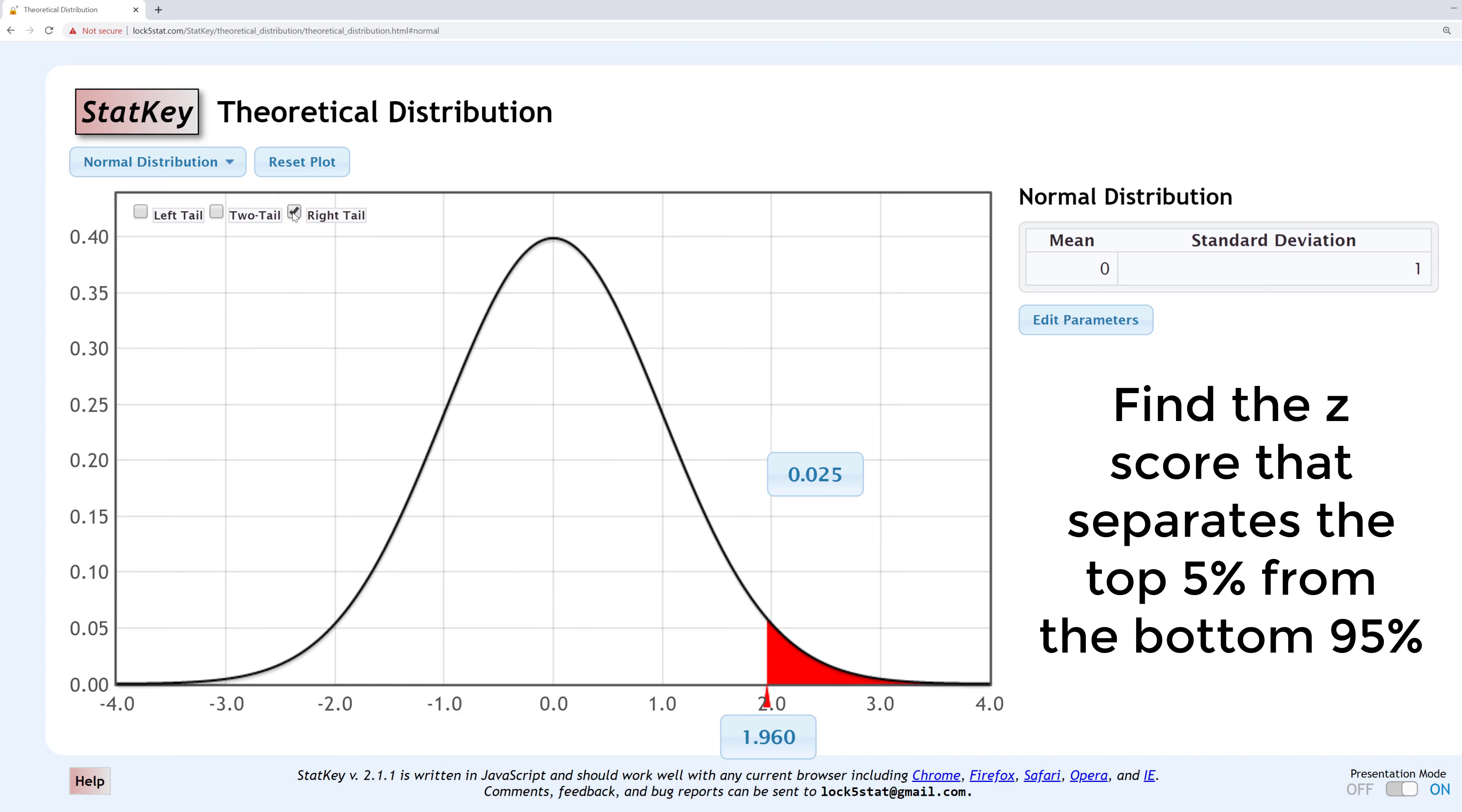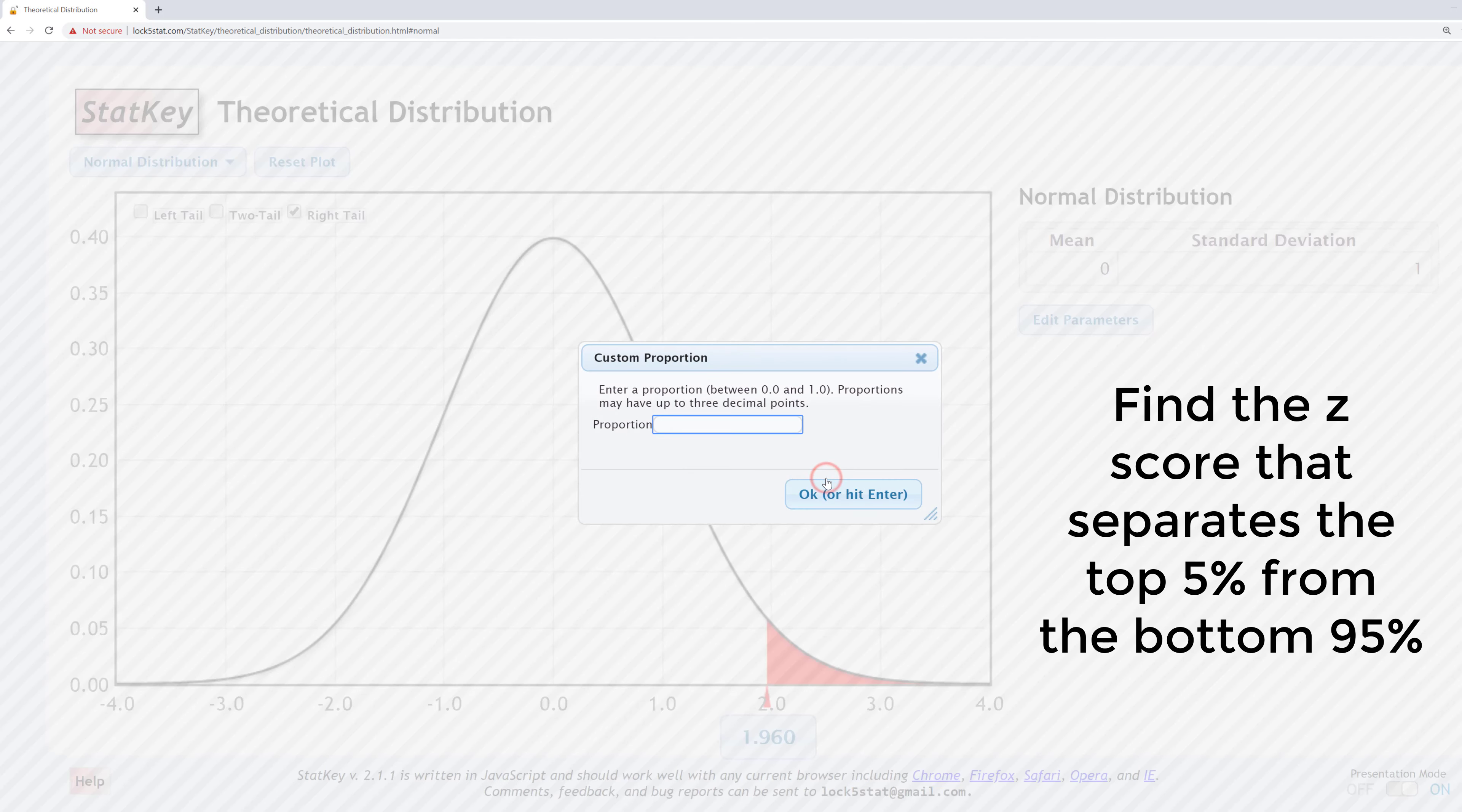Now I'll change the proportion. To do this, I'll click in the blue box that is above the distribution and enter in 0.05 because we have 5% in the upper end. You have to enter the value as a proportion here, so a value between 0 and 1. It will not accept percentages.